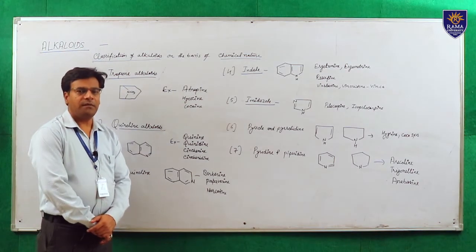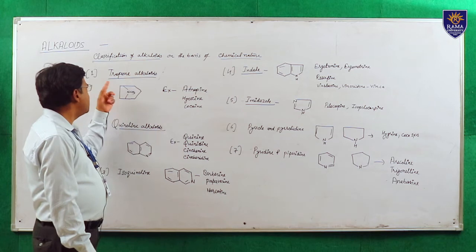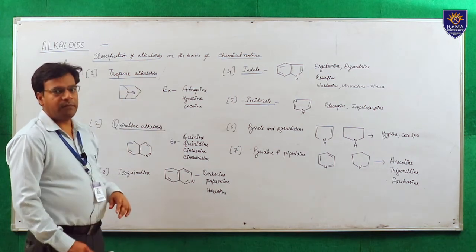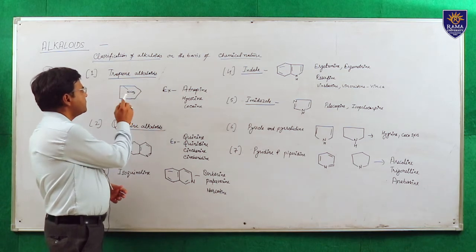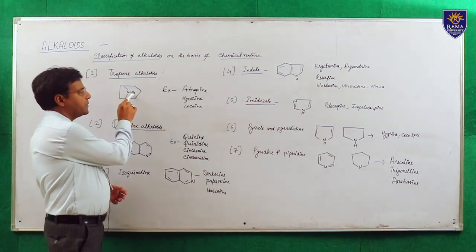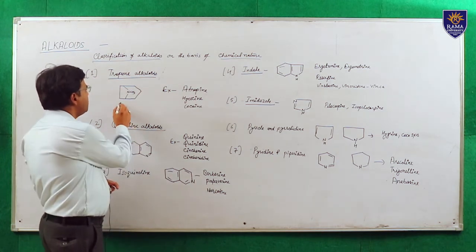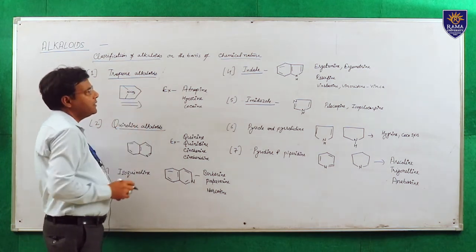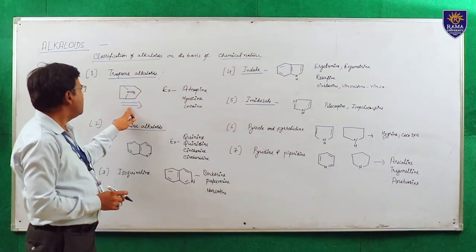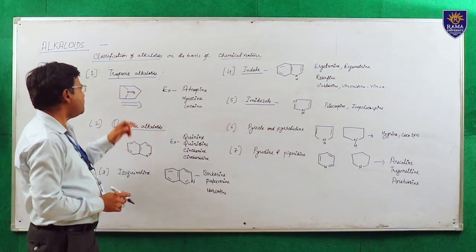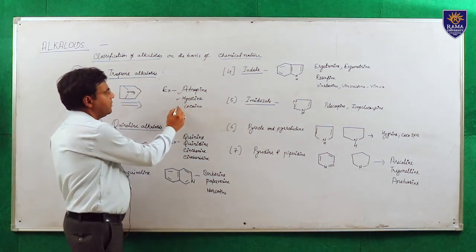Classification of alkaloids on the basis of chemical nature. The first type is tropane alkaloids. The basic moiety of a tropane alkaloid contains one nitrogen atom and a CH3 group. This is the basic moiety of tropane alkaloids, and all tropane alkaloids contain this type of basic moiety. Examples are atropine, hyoscine, and cocaine.